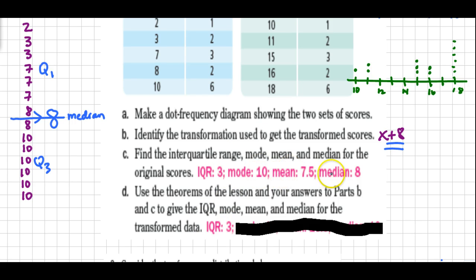The mode, the mean, and the median are all measures of center, and we should add 8 onto all of those. So the new mode should be 18, the new mean should be 15 and a half, and the new median should be 16.